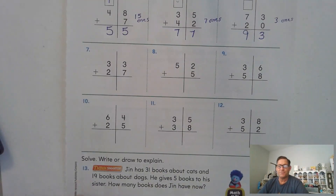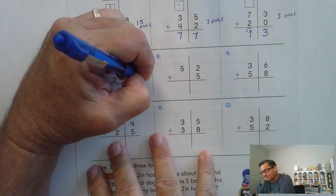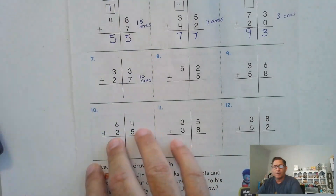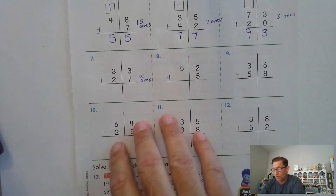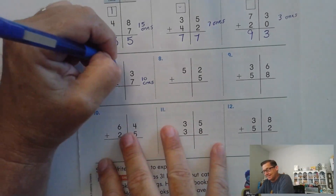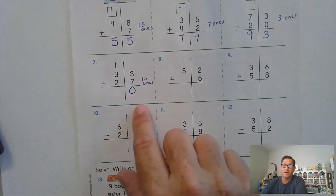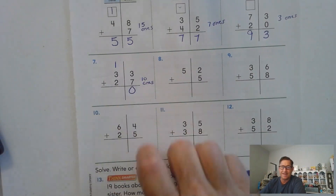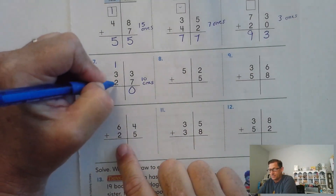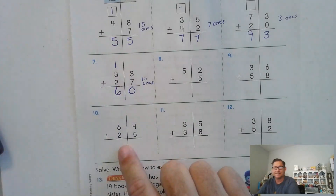7 and 3 — that's 10 ones, right? We trade 10 ones for a 10. So we don't have any ones left if we trade all 10 of those ones for a 10. 3 plus 2 tens is 5 tens, plus the regrouped 10 — 60.